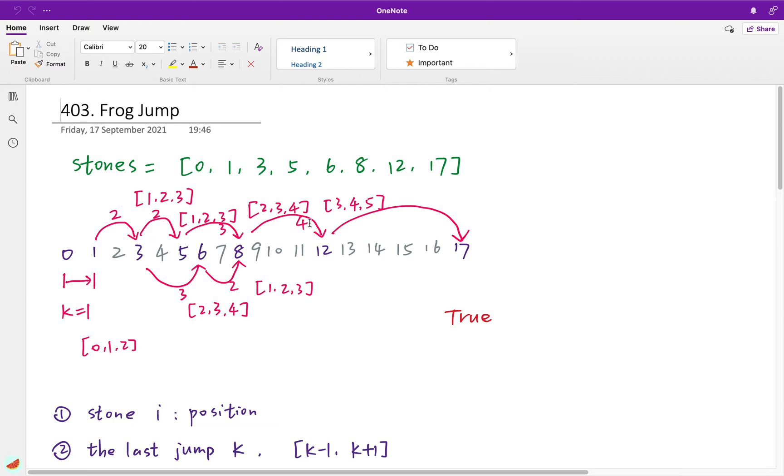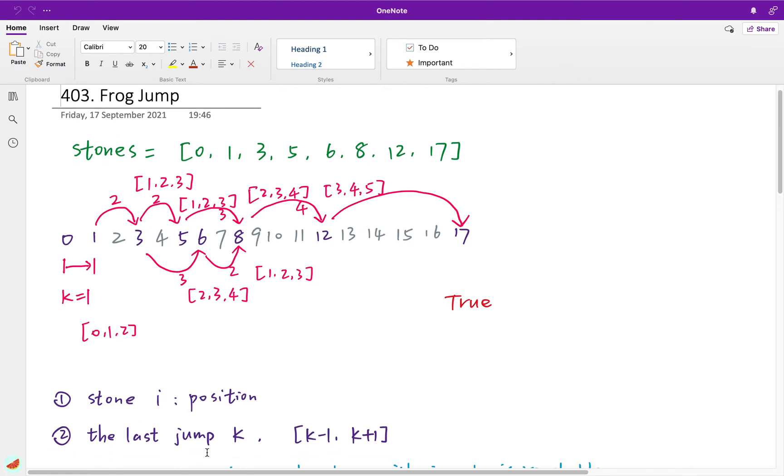And we jump 4 and then we jump 5, so we get to the last position. In this whole progress, you will notice that the stone index i is important. Because if we reach the end, we just return true. If we did not reach the end, we must know where we are now. The other important factor is that we should know what is the last jump.